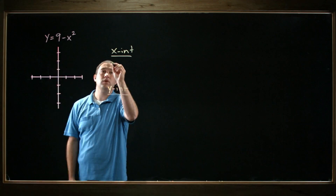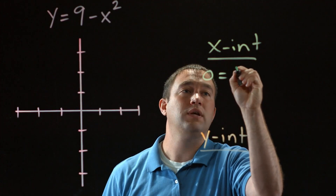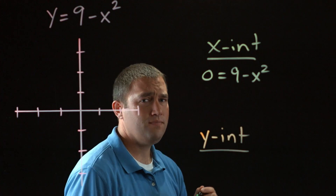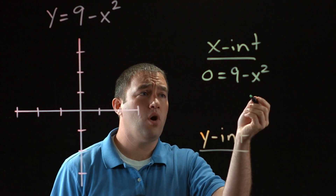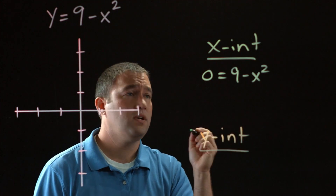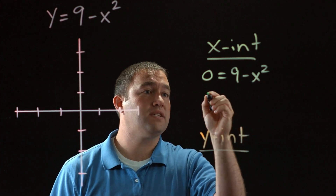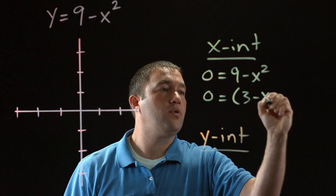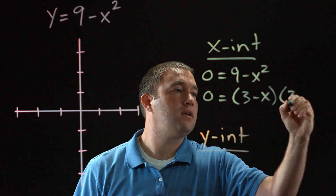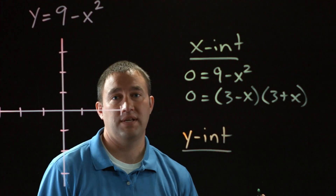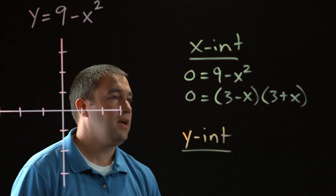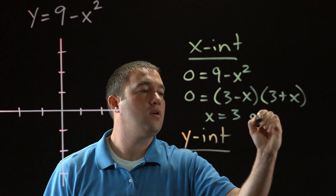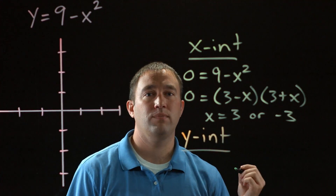If I replace y with 0, I get 0 equals 9 minus x squared. This one's not too hard to solve — it's the difference of two squares, so I factor 9 minus x squared and I get 0 equals (3 minus x)(3 plus x). This gives me the solution x equals 3 or negative 3.